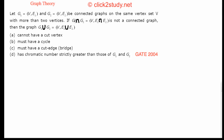G1 intersection G2 is (V, E1 ∩ E2), which is quite obvious. Since both graphs share the same vertex set but have different edges, taking the intersection of the two graphs means taking the intersection of their edges. It is given that this intersection is not a connected graph.